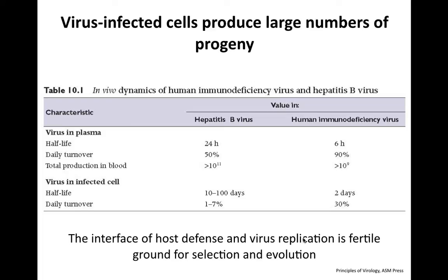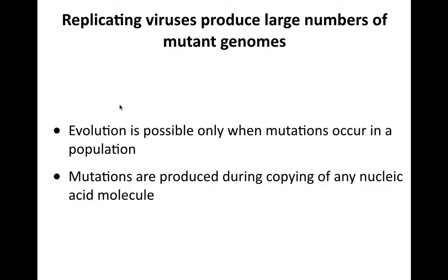This is a great area for evolution. Viruses make lots of particles, we have a host defense, and that interface is where one of the places that selection and evolution occurs. You can only have evolution when mutations occur in a population. It wouldn't matter if you made billions of virions every day — if they were all genetically identical, no evolution would occur. So mutations are essential, and these are produced during copying of the nucleic acid, where the vast majority of the fertile ground for evolution takes place.